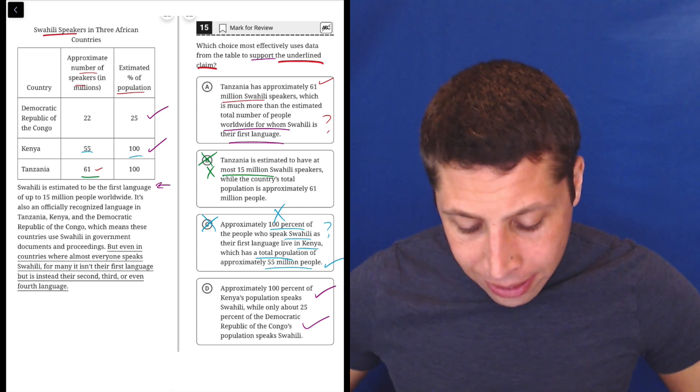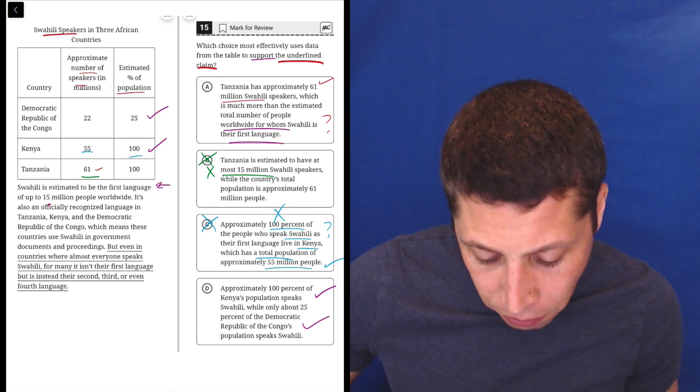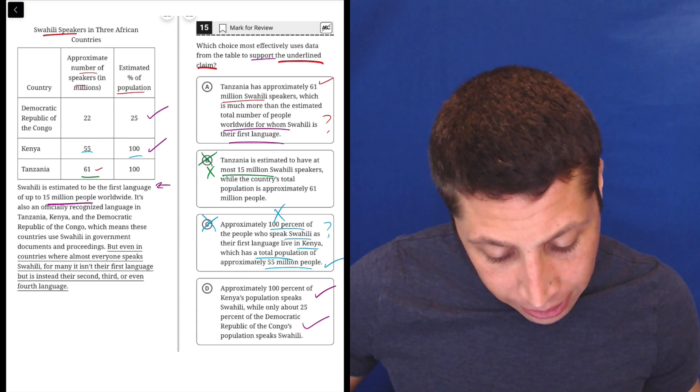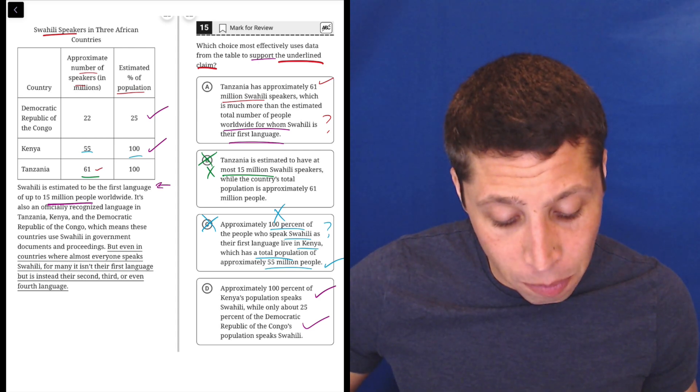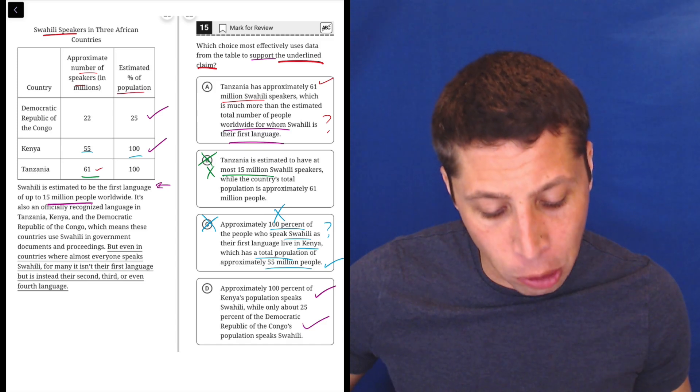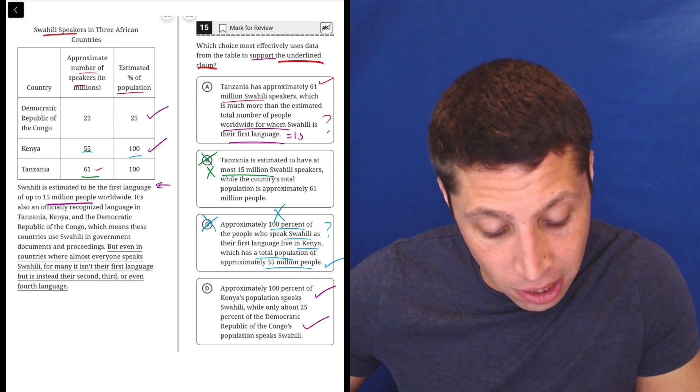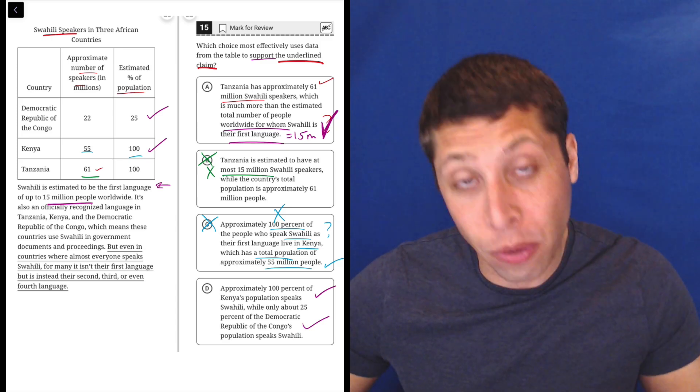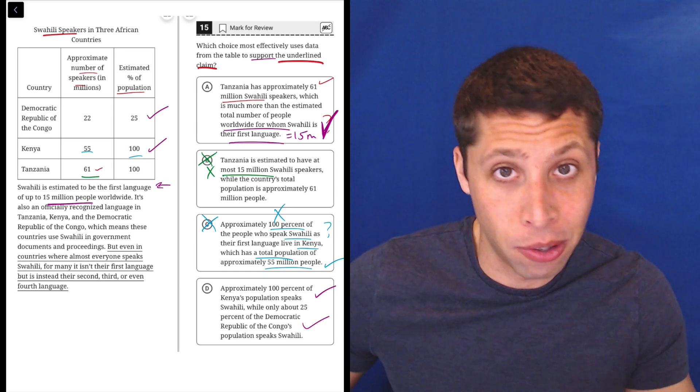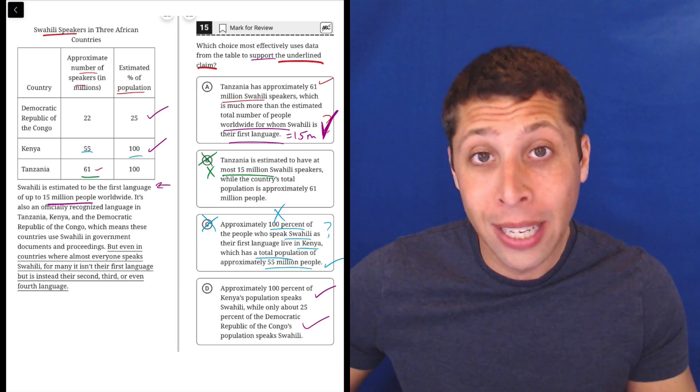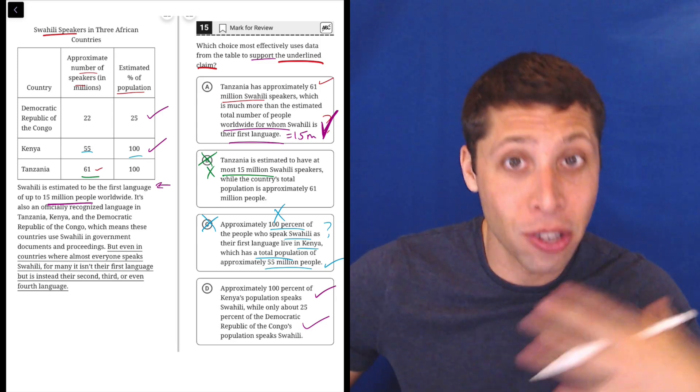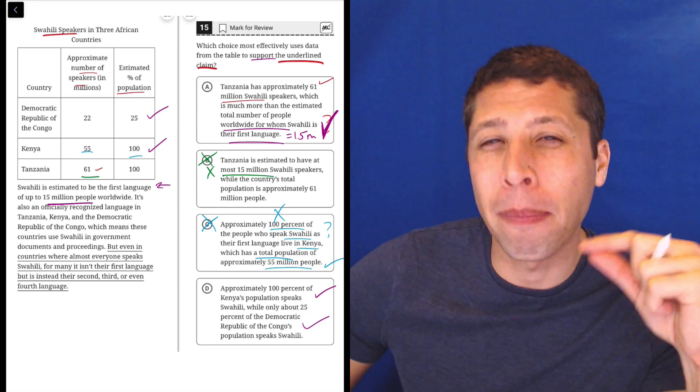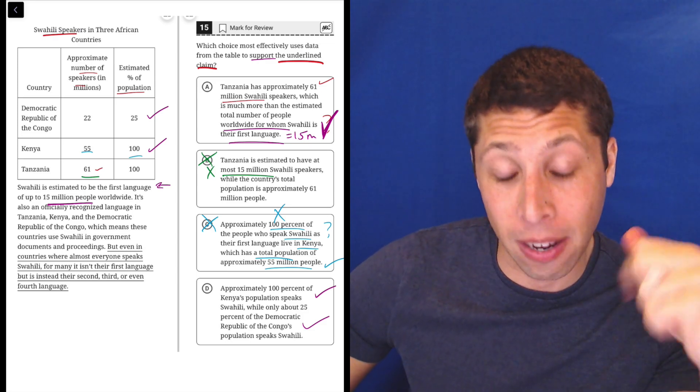So let's see if we can answer these two questions. So go to the passage now. Swahili is estimated to be the first language of up to 15 million people worldwide. Okay. So now going back to A, Tanzania has approximately 61 million Swahili speakers, which is much more than the estimated total number of people worldwide for whom Swahili is their first language, which is 15 million. So yes, that is true, right? So notice, now this is why we couldn't eliminate A. This is also true in the same way that D is true. The facts match the passage. The facts match the chart. So we've got to dive deeper.